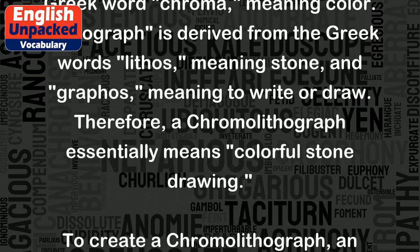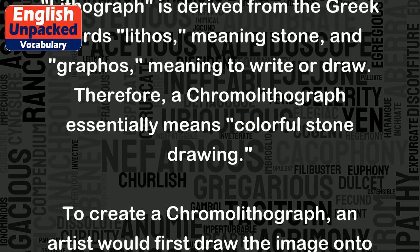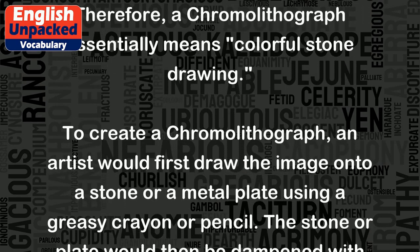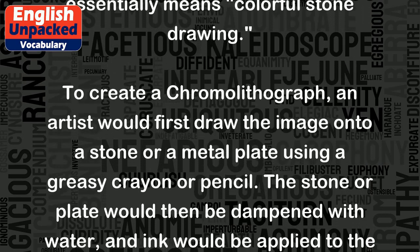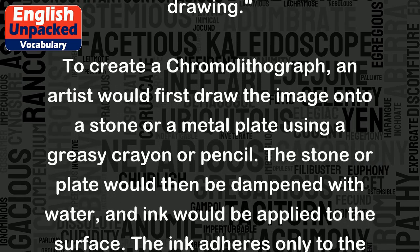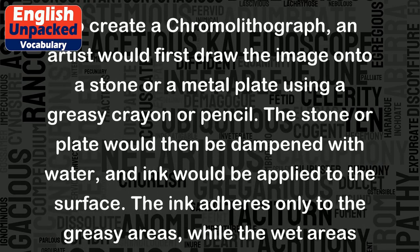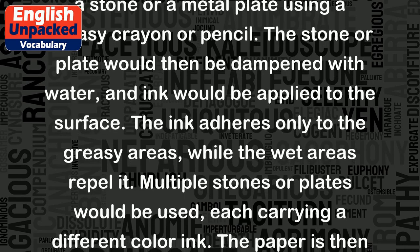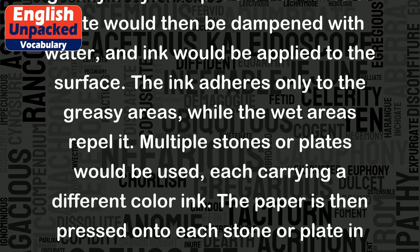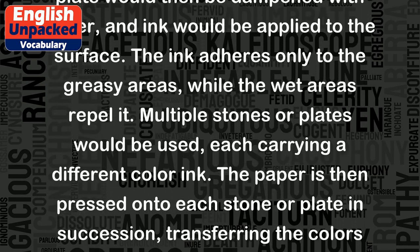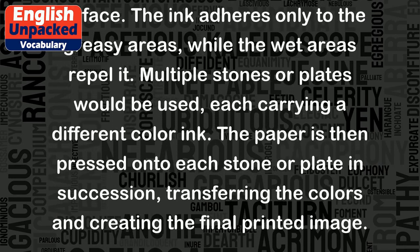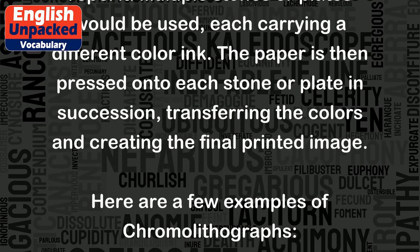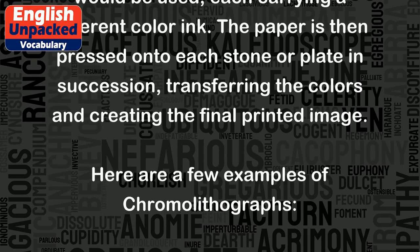Therefore, a chromolithograph essentially means colorful stone drawing. To create a chromolithograph, an artist would first draw the image onto a stone or a metal plate using a greasy crayon or pencil. The stone or plate would then be dampened with water, and ink would be applied to the surface. The ink adheres only to the greasy areas, while the wet areas repel it. Multiple stones or plates would be used, each carrying a different color ink.